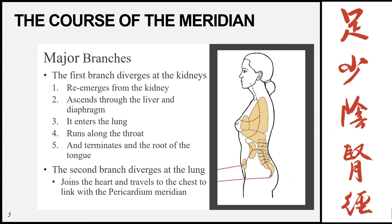Now let's look at the major branches. The first branch is the ascending portion from the kidneys, which re-emerges and ascends through the liver and diaphragm, enters the lungs, runs along the lungs up through the throat, and terminates at the root of the tongue. There is a second branch which diverges at the lungs, joins the heart, and travels to the chest to link with the pericardium meridian.